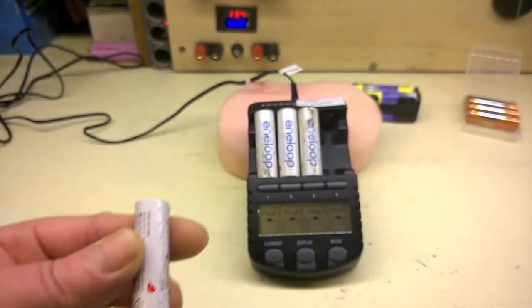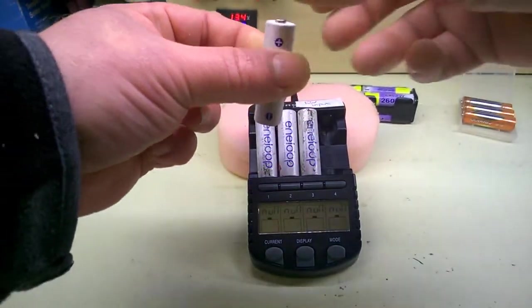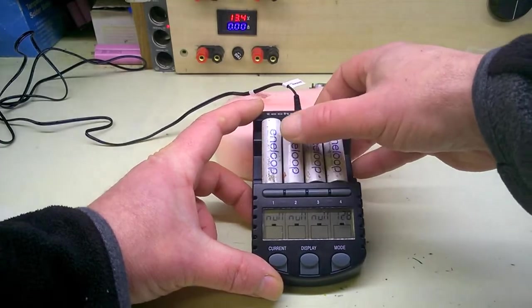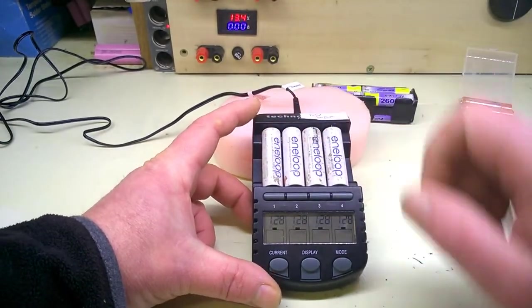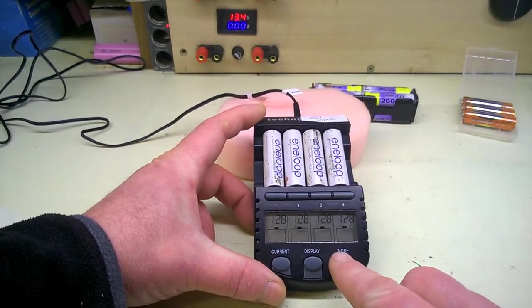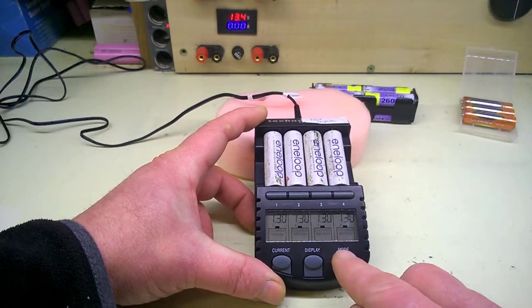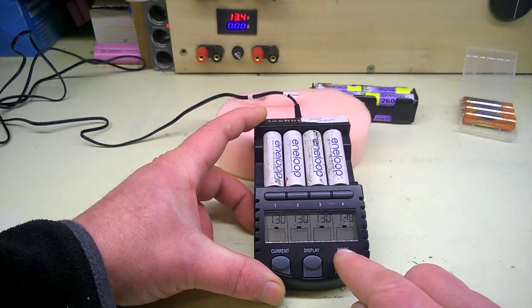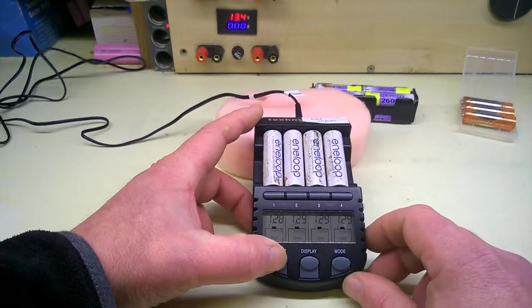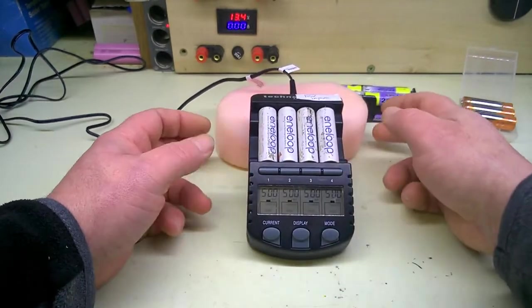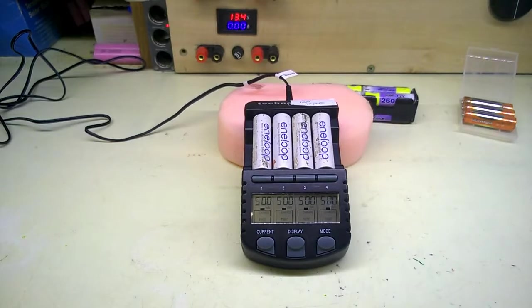Okay, ready for a test. I've marked these 1, 2, 3, 4, and the banks are 1, 2, 3, 4 from left to right. So I'm going to set the mode - charge test, that's what I want. I'll set the current - it's already set on 500, so charge at 500mA, discharge at 500. I'll come back to that in about 9 to 10 hours.